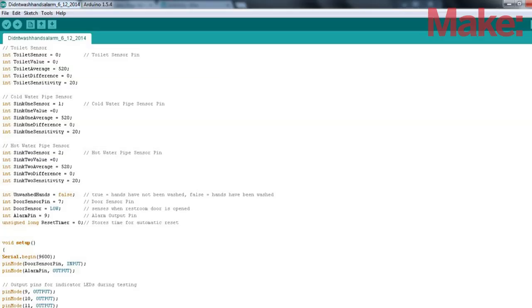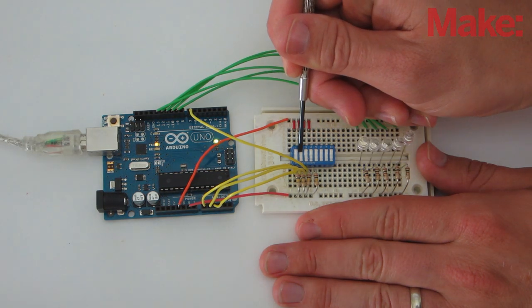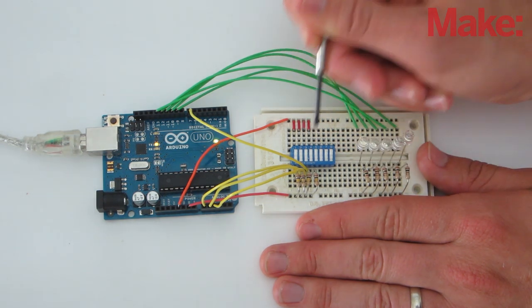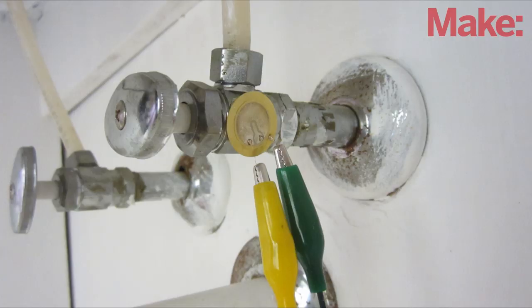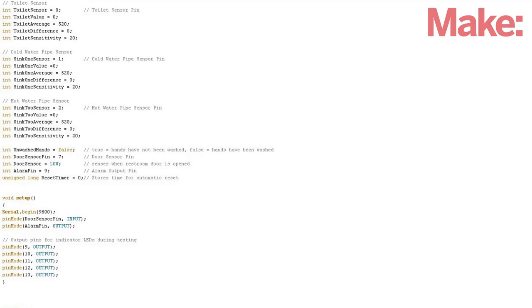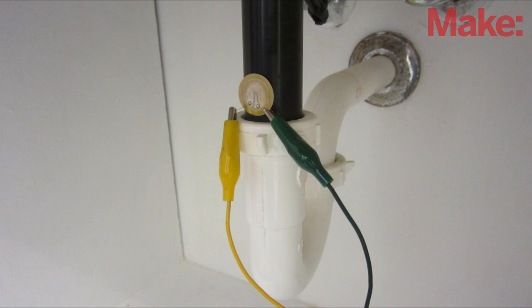Next, you need to set up the Arduino code. I started by testing the code using an array of switches. Once that was working, I hooked up the actual sensors. Then, I attached the sensors to the pipes with hot glue. You'll probably need to make some adjustments. For instance, you can change the sensitivity factor in the code to calibrate your sensors. You can also experiment with different resistor values on the amplifier, or you can try moving the sensors to a different location on the pipe.